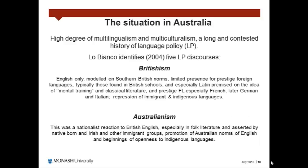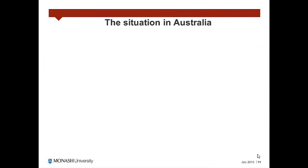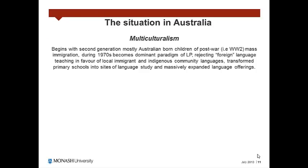On the other hand, Australianism was a nationalist reaction to British English, especially in folk literature. This discourse was asserted by native-born and Irish and other immigrant groups, and aims at the promotion of Australian norms of English and beginnings of openness to indigenous languages. Multiculturalism began with second-generation, mostly Australian-born children of post-World War II mass immigration. During the 70s, this discourse became the dominant paradigm of language policy, rejecting foreign language teaching in favour of local immigrant and indigenous community languages. It transformed primary schools into sites of language study and massively expanded language offerings.